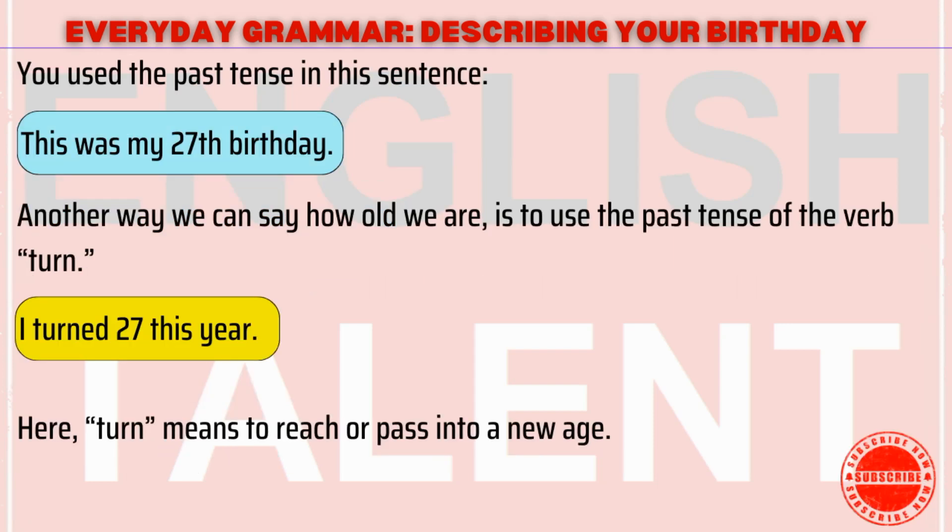You used the past tense in this sentence: This was my 27th birthday. Another way we can say how old we are is to use the past tense of the verb turn: I turned 27 this year. Here, turn means to reach or pass into a new age.